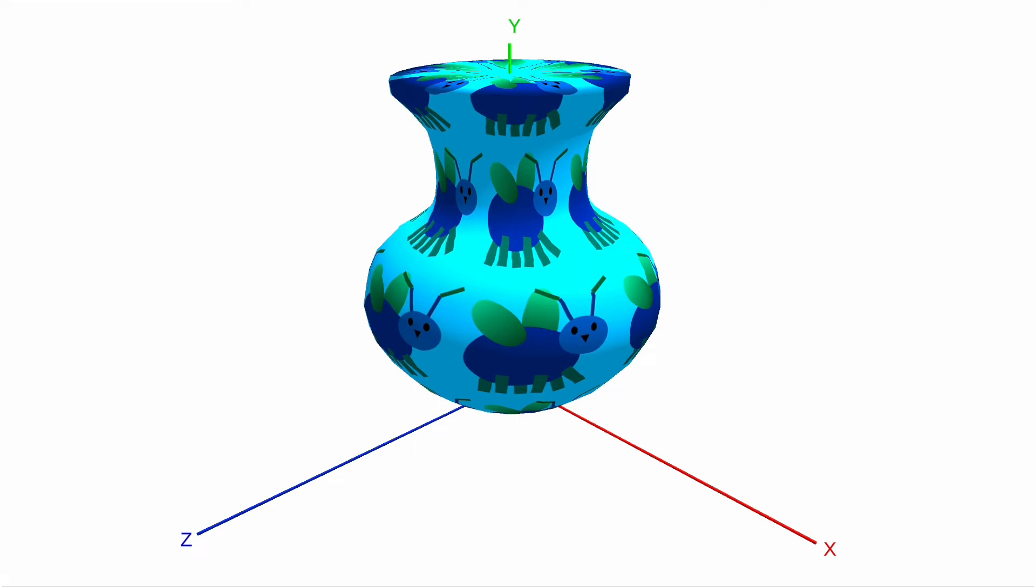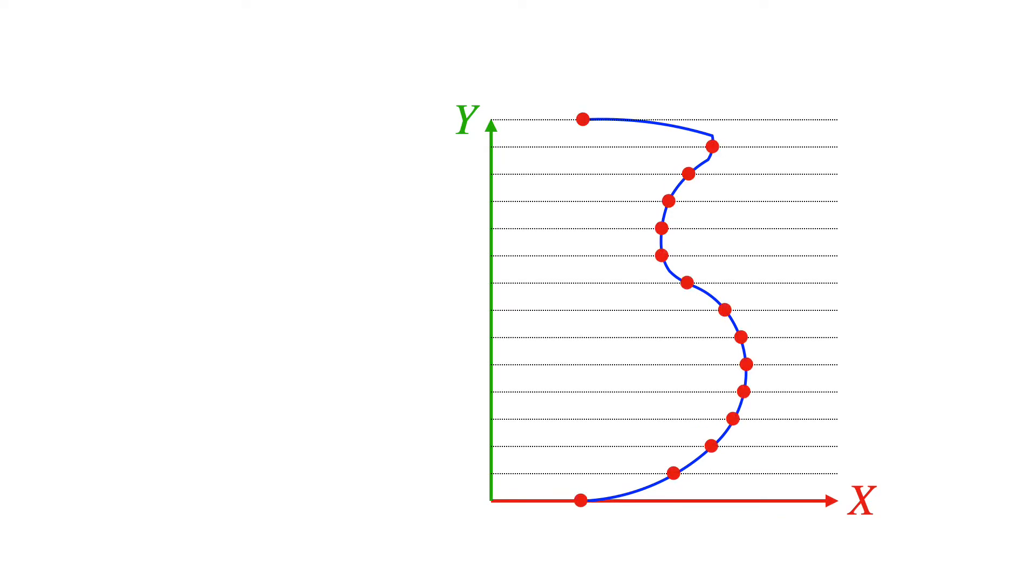Let's see how all of this works. Let's draw a curve on the xy-plane and represent it with a sequence of points indexed by the variable j. Each point has 3D coordinates xj, yj, and 0. And if we rotate it around the y-axis, we'll get our vase.